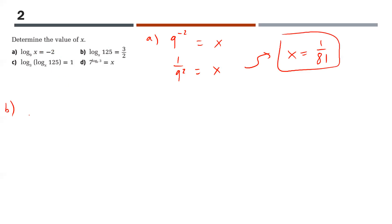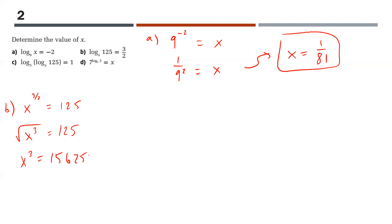For part B, same idea — change it to an exponential: x to the power of 3/2 equals 125. A fractional exponent means the square root of x cubed equals 125. To simplify, square both sides: 125 squared is 15,625. Then take the cube root of 15,625, which equals 25. So the answer to B is x equals 25.